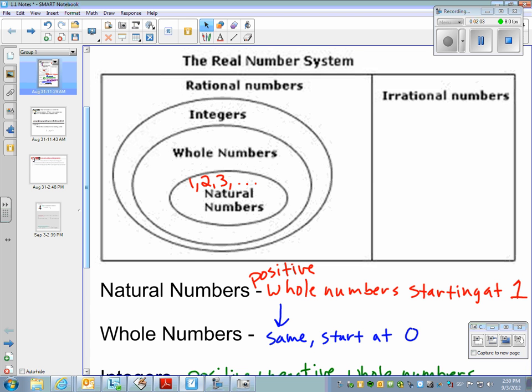Then we add in 0. So that's the whole numbers. Those are 0, 1, 2, 3, 4, etc., adding up.